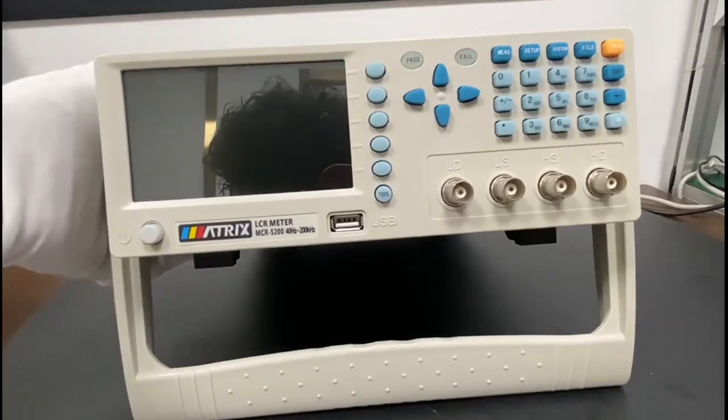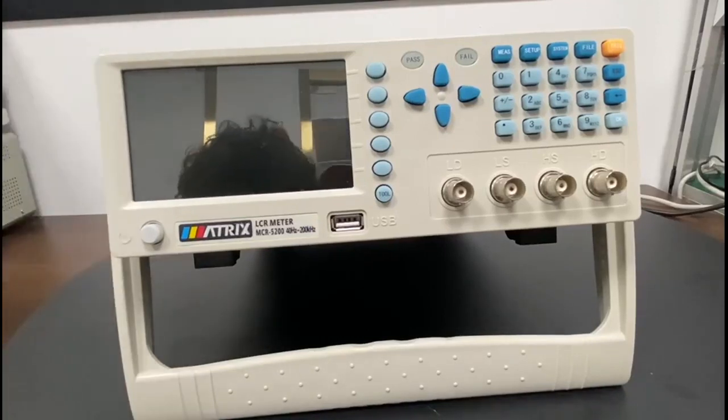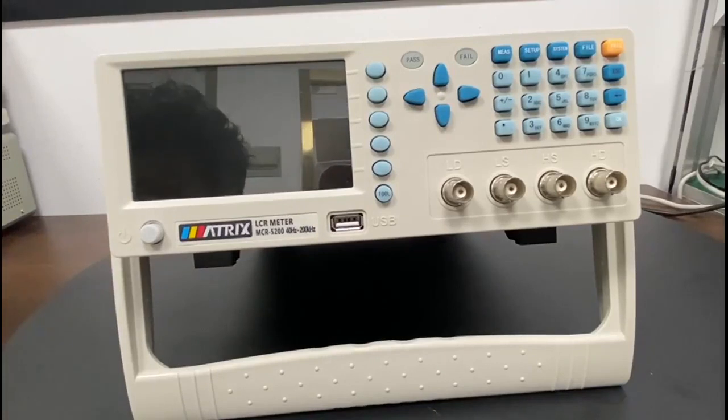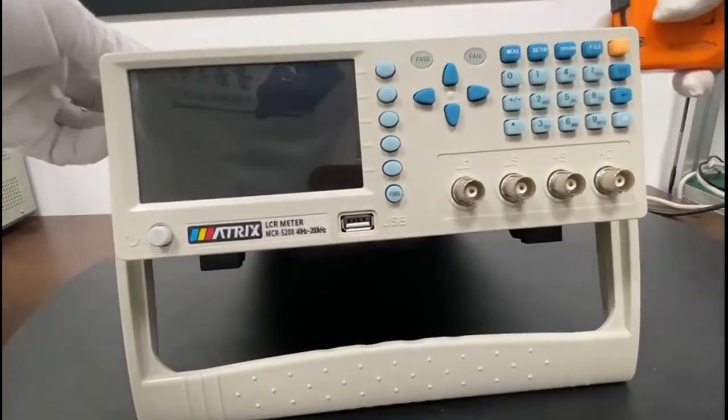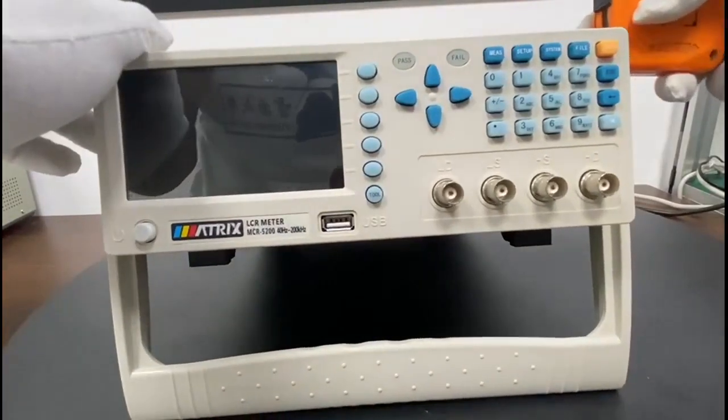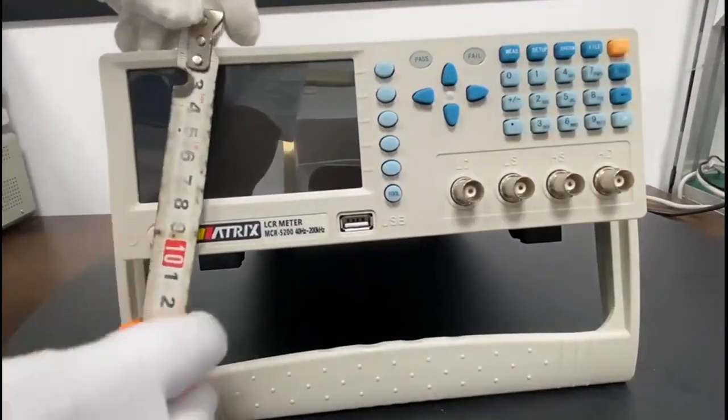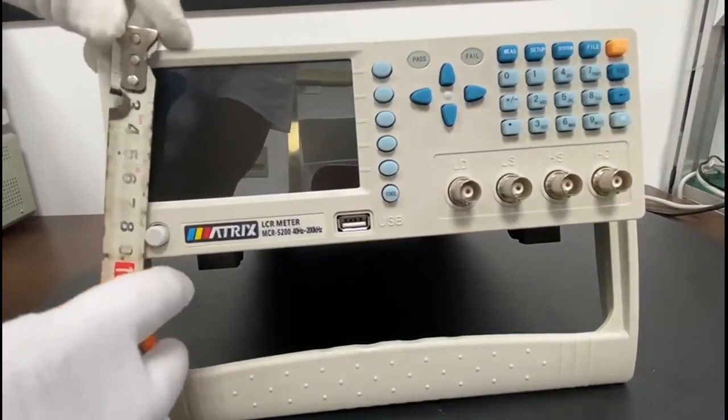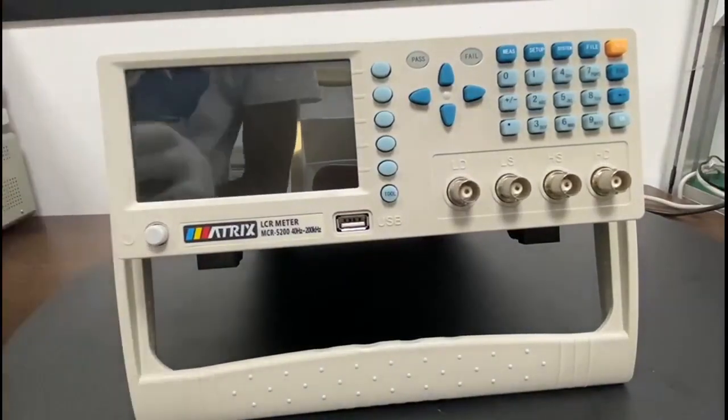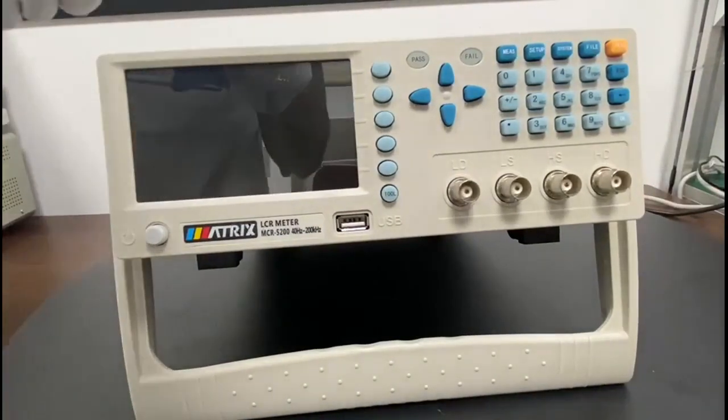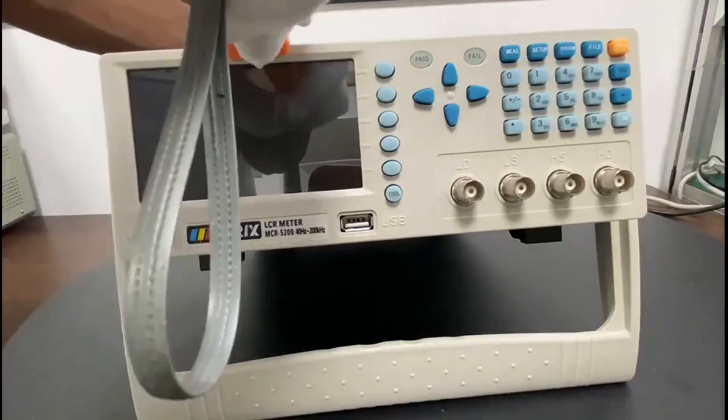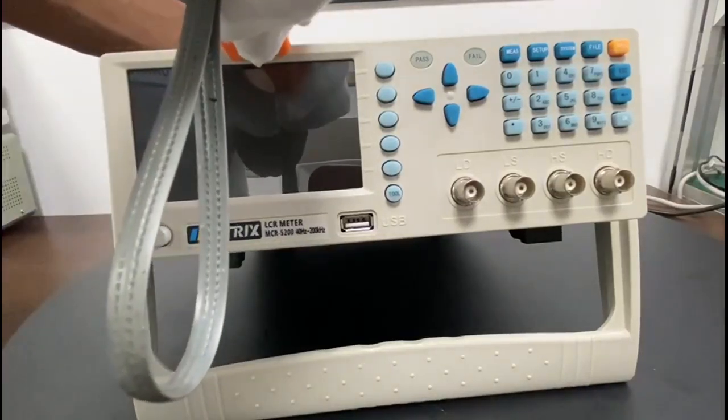The net weight of this machine is 3.5 kilograms and the instrument size is about 240 millimeter width and the height of this machine is 100 millimeter and the depth of this machine is about 330 millimeter.